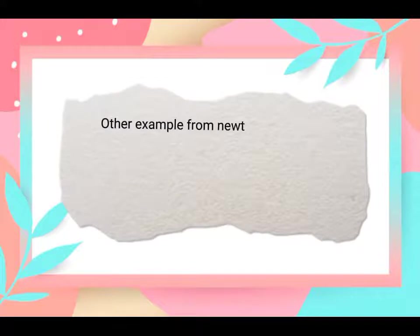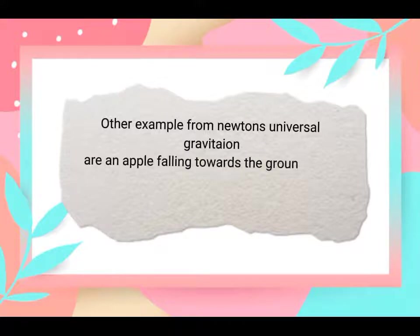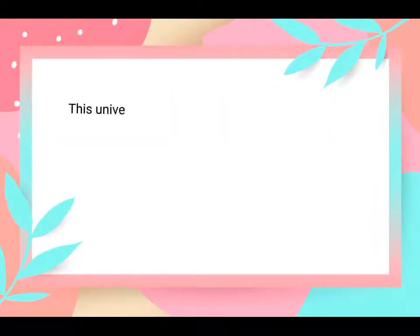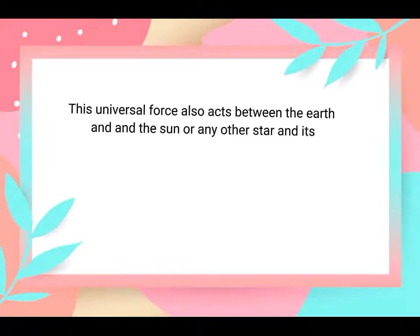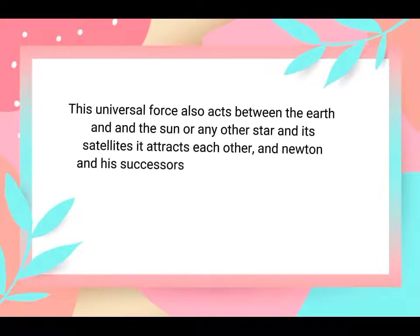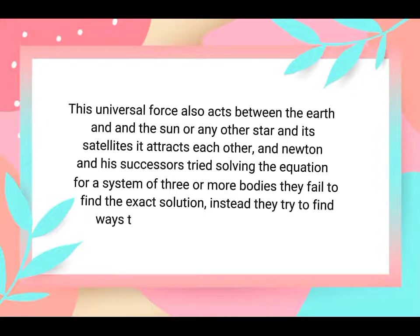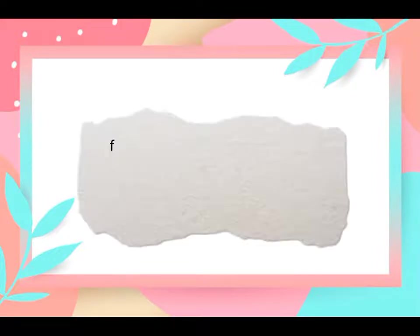Newton's law of universal gravitation states that any two bodies in the universe attract each other with a force directly proportional to the product of their masses and inversely proportional to the square of the distance between them. Examples include an apple falling toward the ground and the moon orbiting the earth. Newton and his successors tried solving the equation for a system of three or more bodies, but they failed to find an exact solution. Instead, they tried to find ways to calculate approximate numbers.